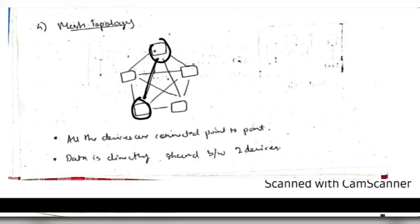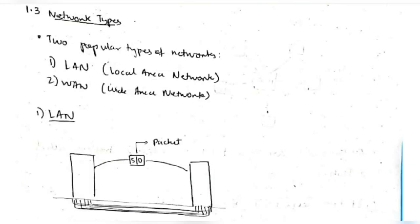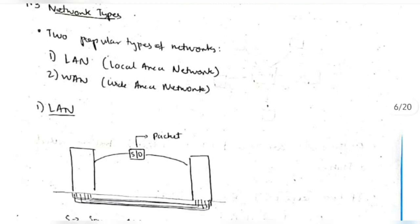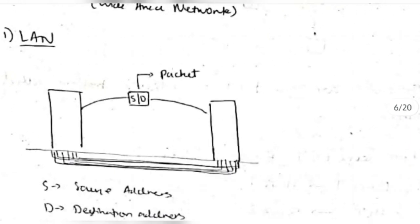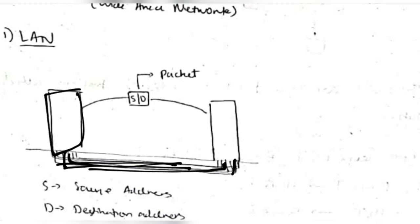That's mesh topology. There are two popular types of networks: LAN and WAN. LAN means Local Area Network — a building or campus where connections are made underground between buildings, forming a LAN. Data is sent using source and destination addresses to identify where the data should go.